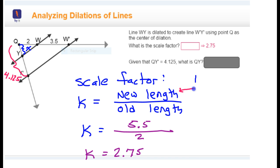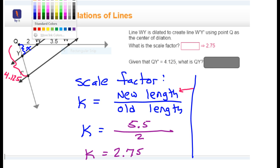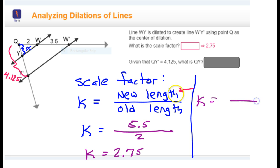So, we know that the scale factor, which I'm going to call K, is always equal to the new divided by the old. That's the formula for scale factor. But, we now know that the scale factor is 2.75. So, I'm going to plug that in. So, 2.75 equals the 4.125, that is a new distance.